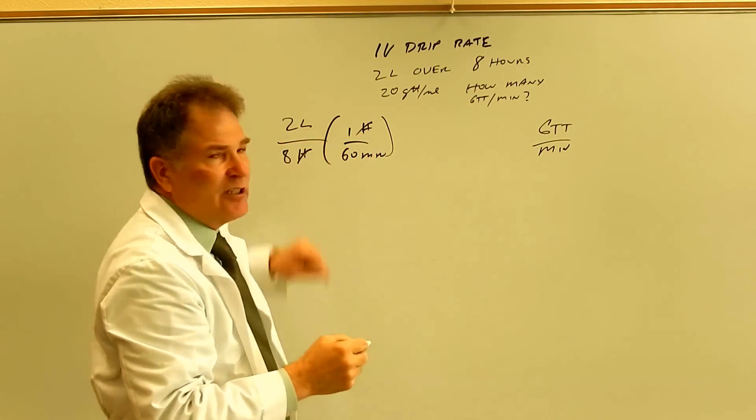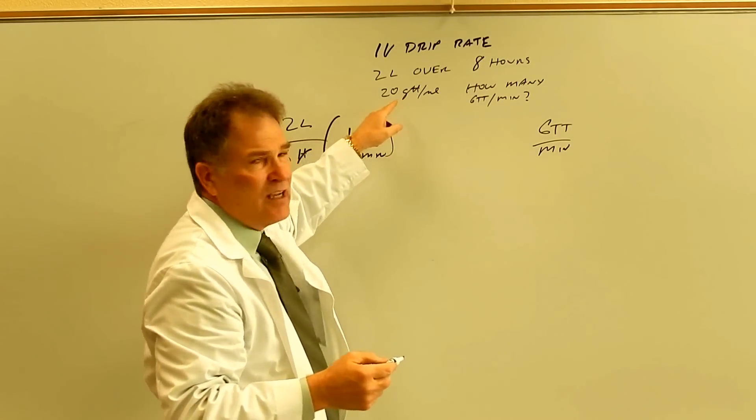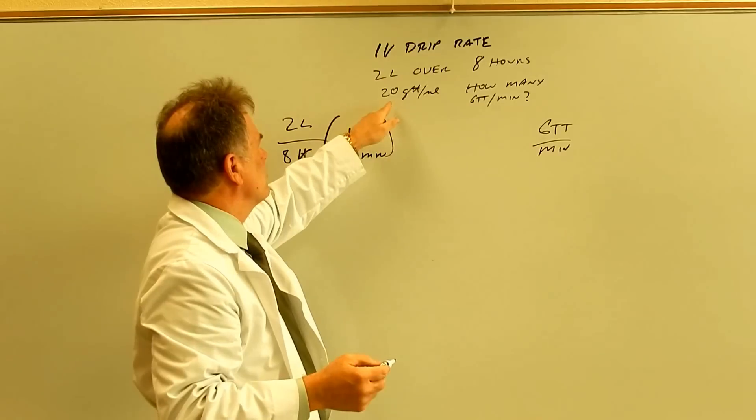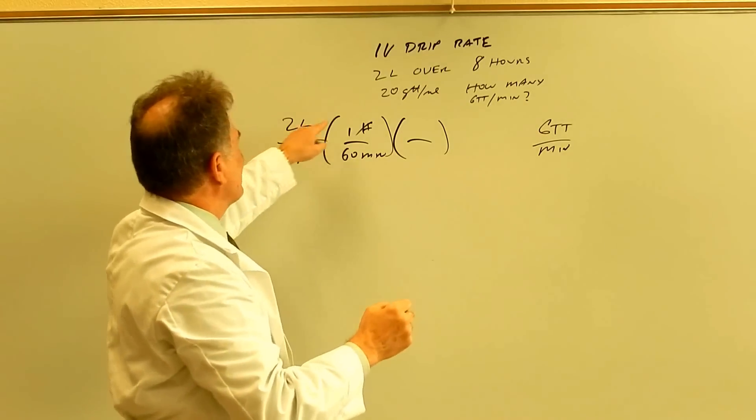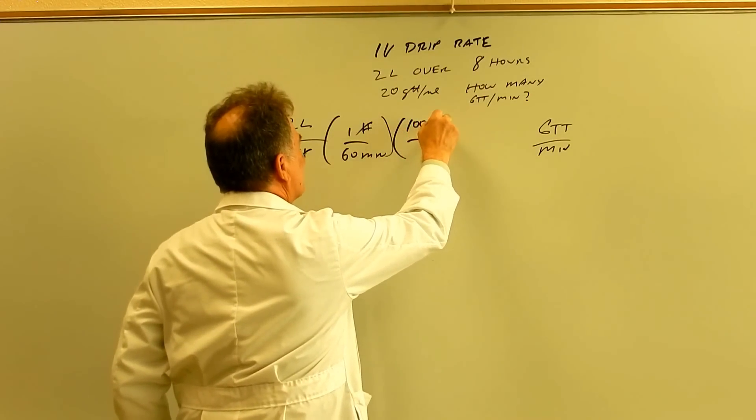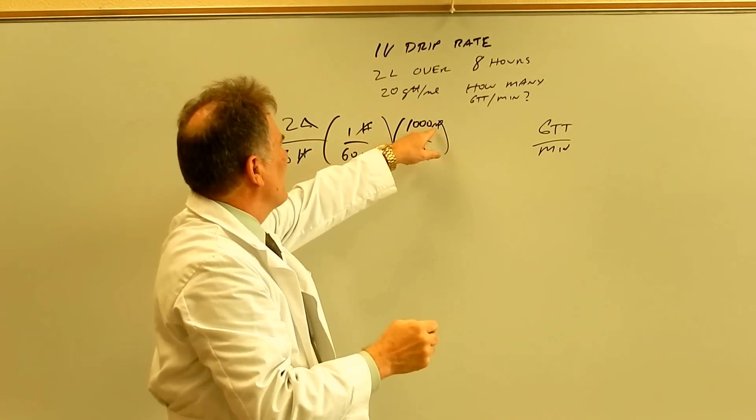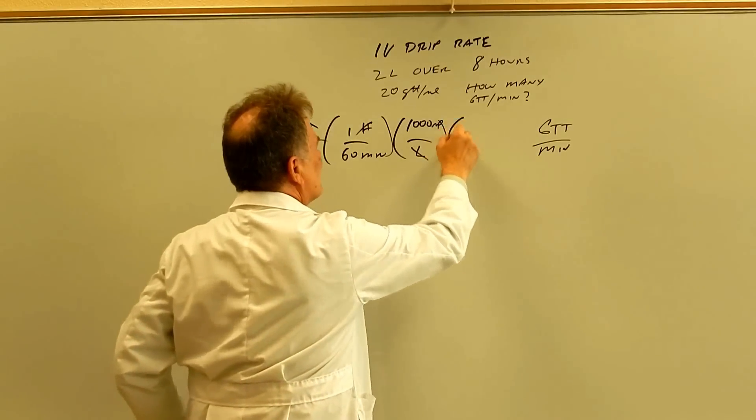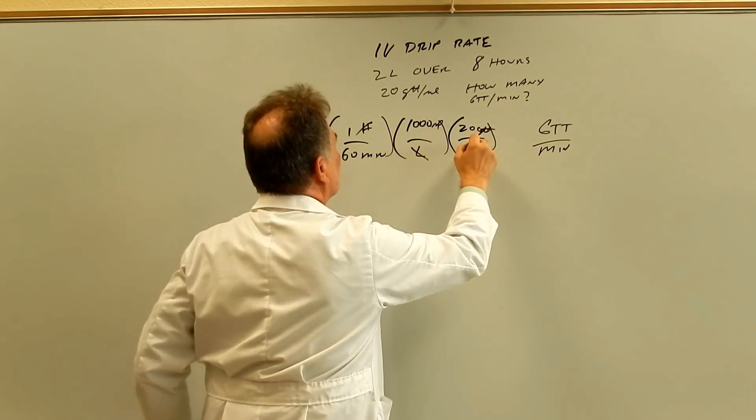Now to change liters into drops, we know that the drop factor, that's how many drops per ml, is 20 drops per ml. But we have to go from liters first, of course. So there's a thousand ml per liter. And now we have to go from ml to drops. So there's 20 drops per ml.